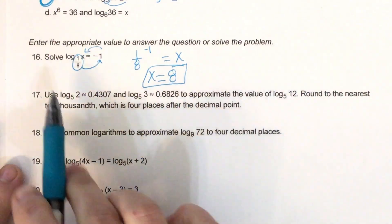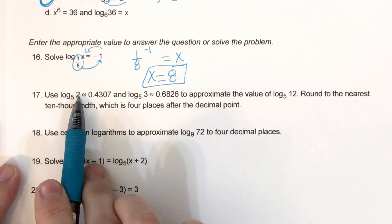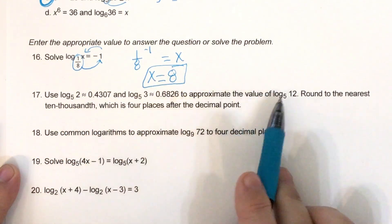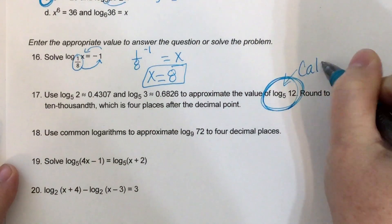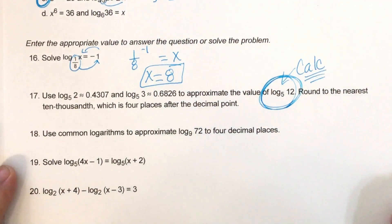Okay, 17. It's telling us to use log base 5 of 2 and log base 5 of 3 to approximate this, but we don't need to do that. We can just put this straight in our calculator. And there's two ways to do it, so I'm going to show you both ways.